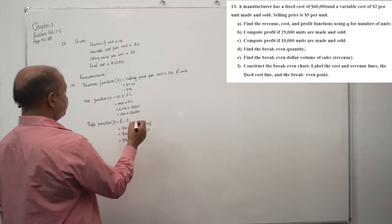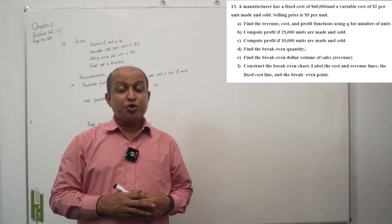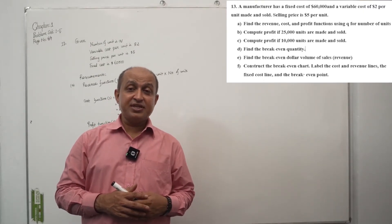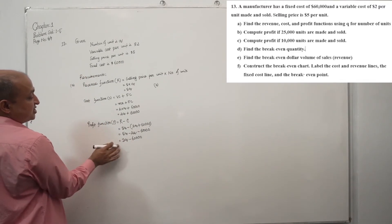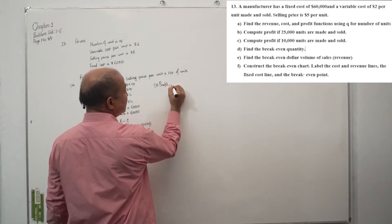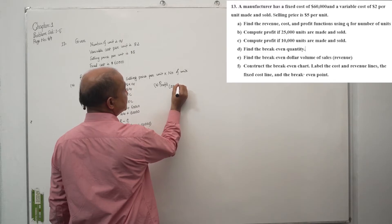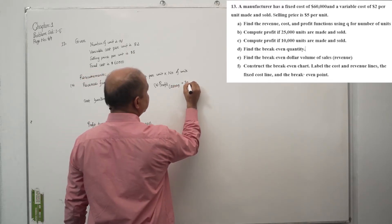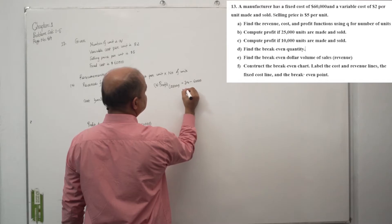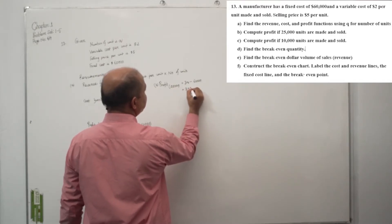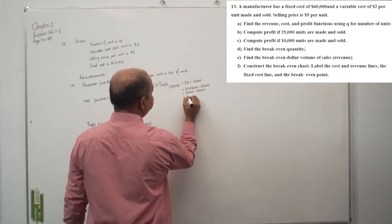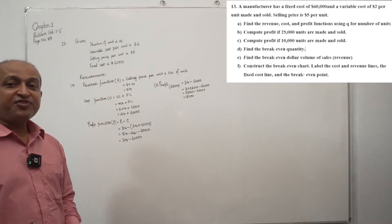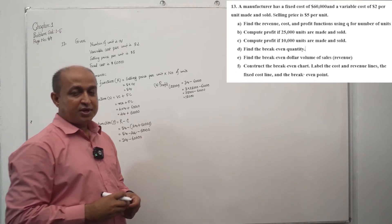This is our profit function: P = 3Q - 60,000. Requirement B: compute the profit if 25,000 units are made and sold. Using the profit function: 3 × 25,000 minus 60,000 equals 75,000 minus 60,000, which is $15,000 profit.